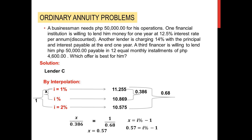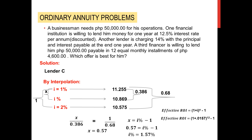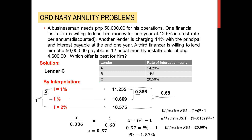Since 1.57% is a monthly rate, we convert it to an annual effective rate of interest: effective ROI = (1 + 0.0157)^12 - 1 = 20.56% per year. Comparing all three lenders: Lender A is 14.29%, Lender B is 14%, and Lender C is 20.56%. We should choose Lender B because it has the lowest interest rate on a yearly basis.